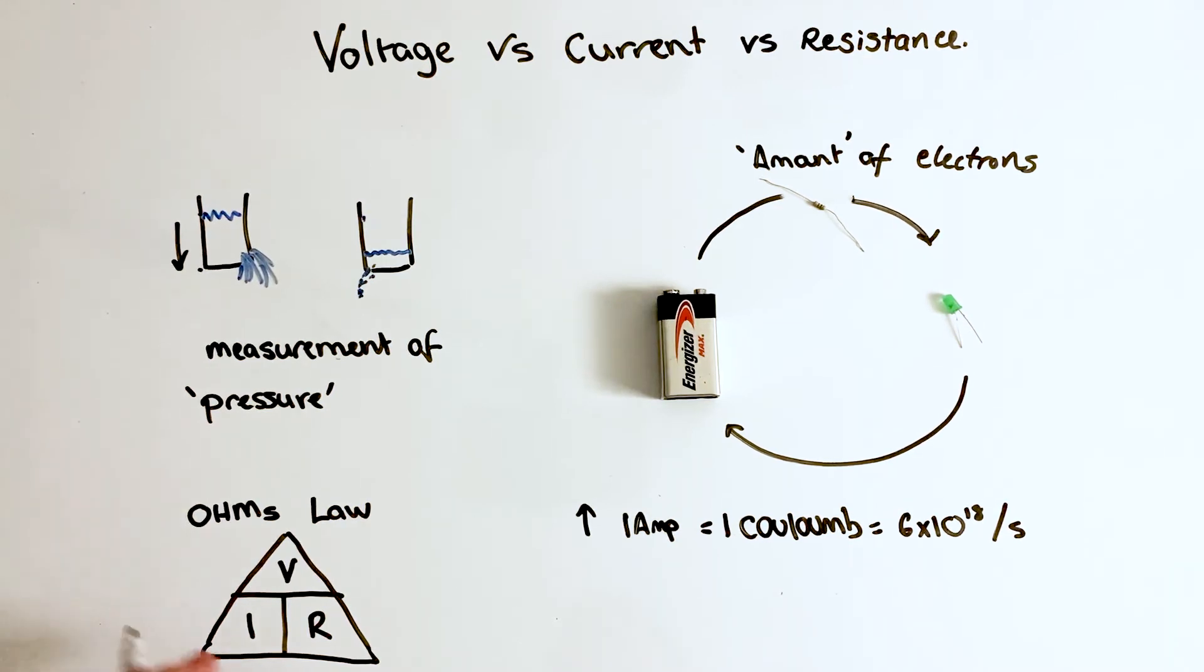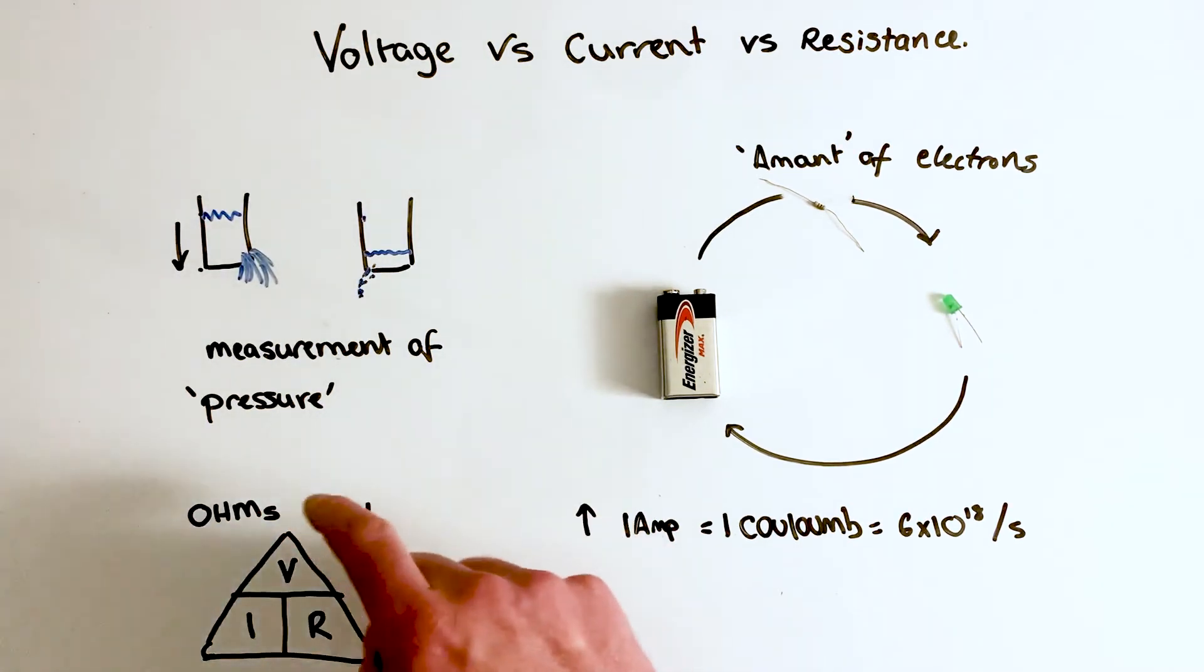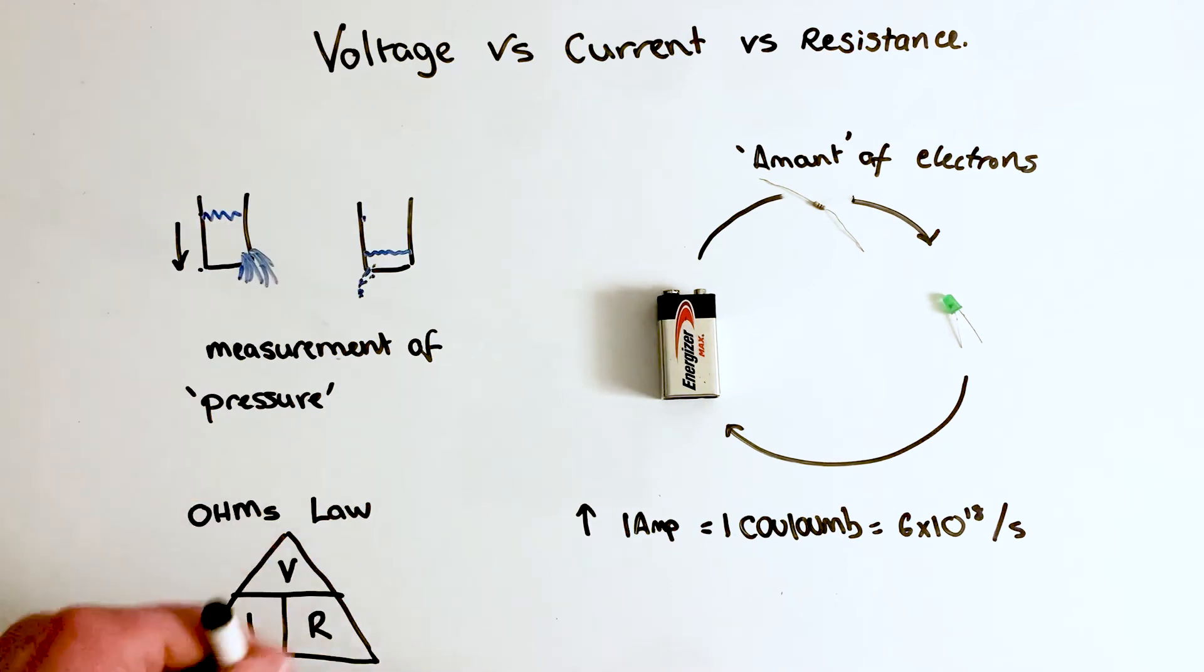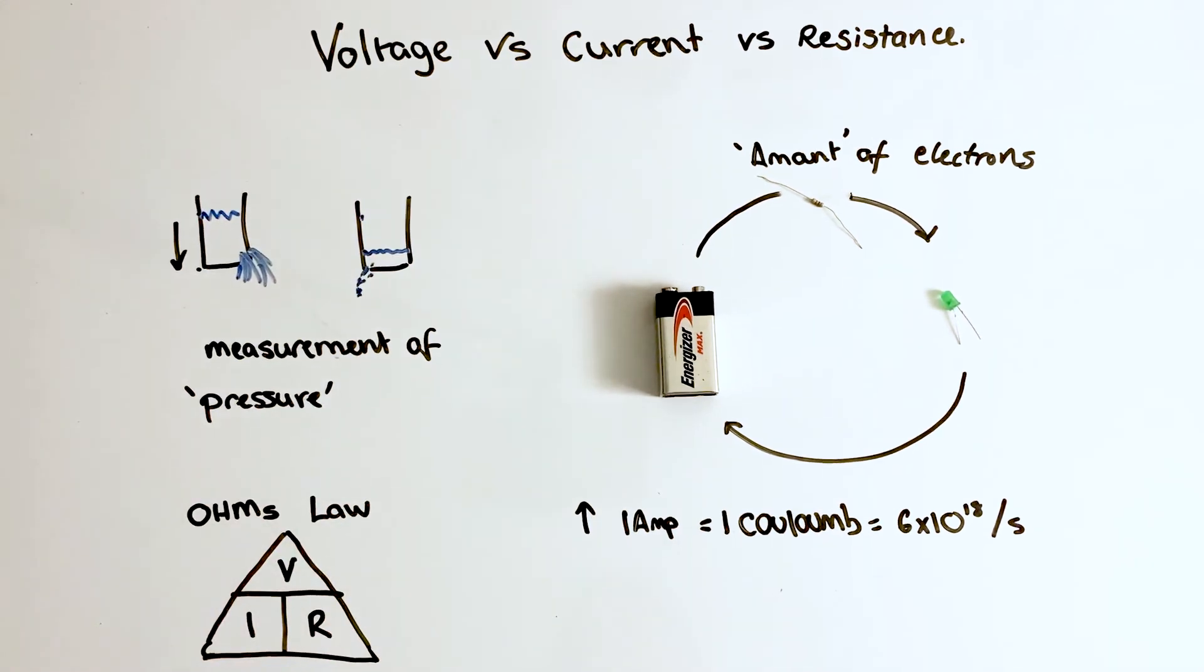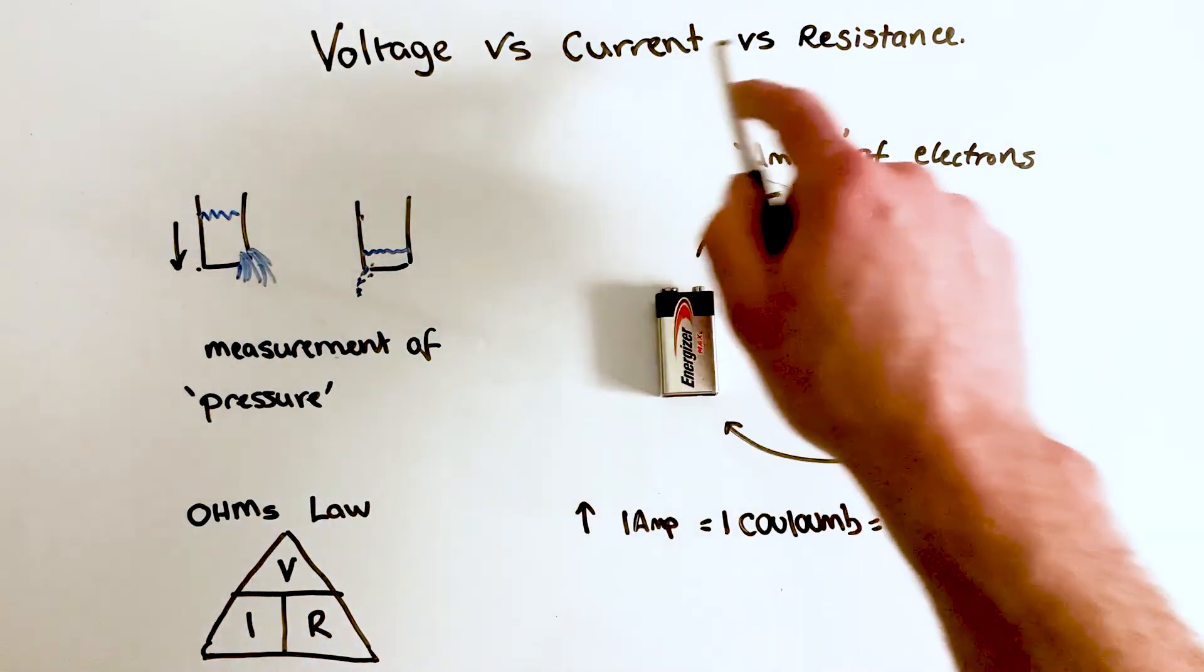And vice versa. If I want to figure out the resistance, I can use voltage divided by current. All these work together, so it's hard to talk about one without mentioning all the others. And it definitely helps to understand each one of these things and how they relate to each other inside of a circuit.